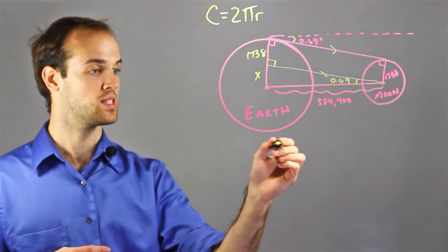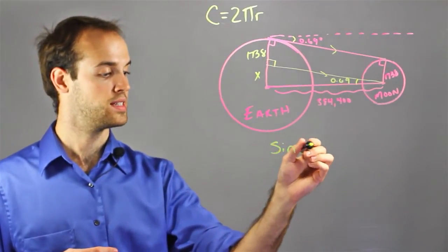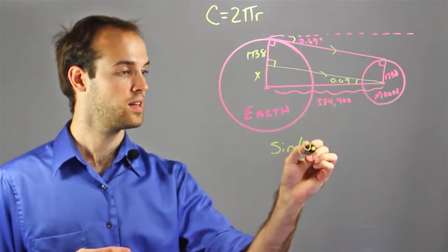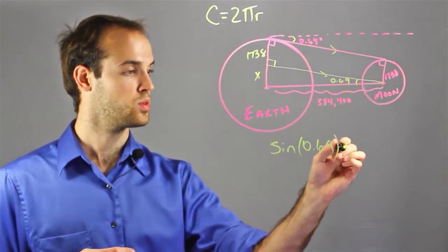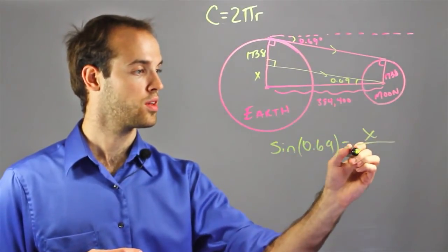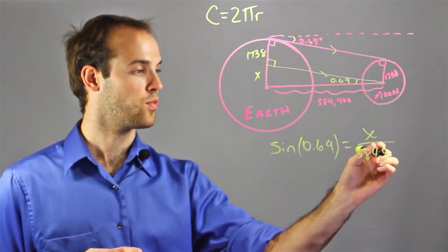So I'm going to use the sine of 0.69 is equal to x over 384,400.